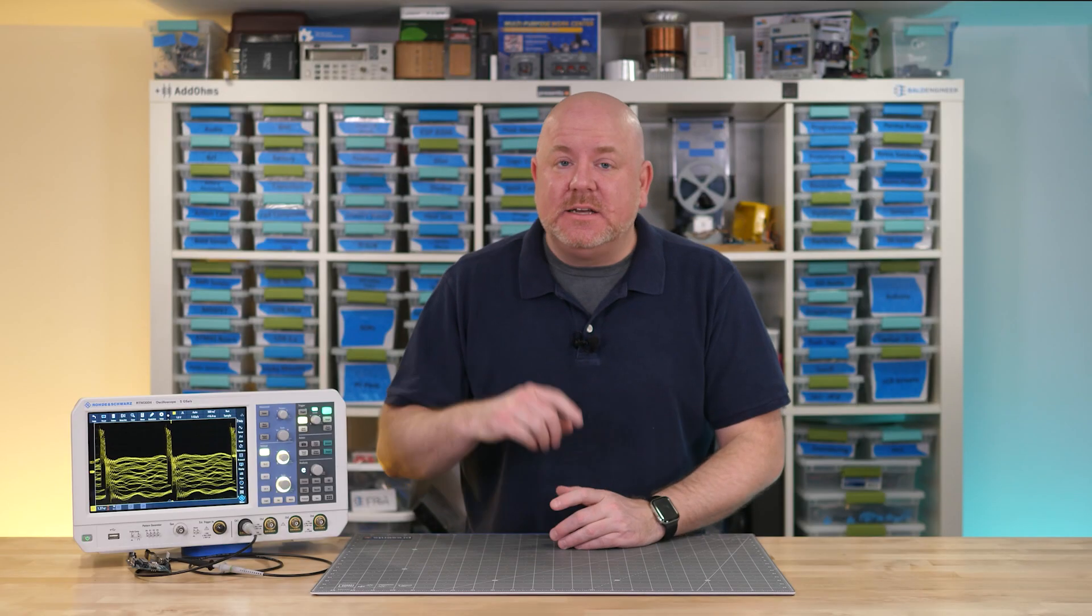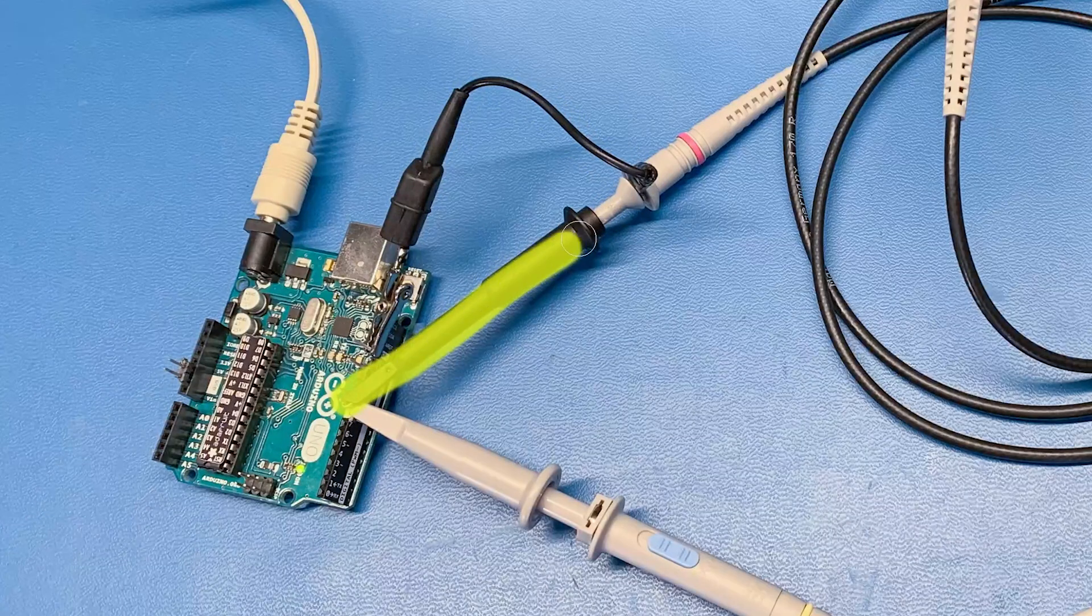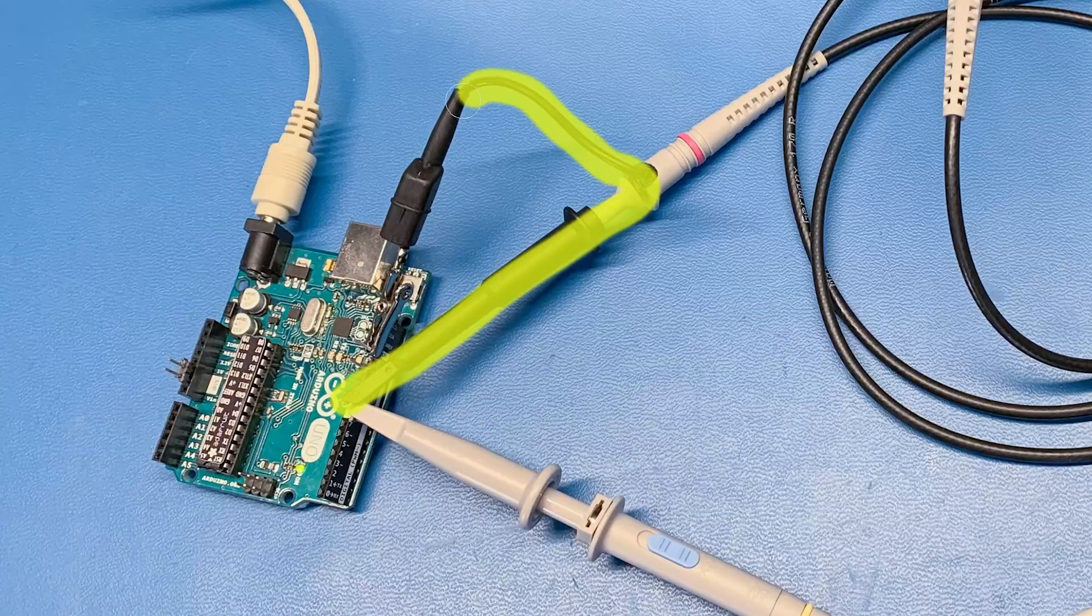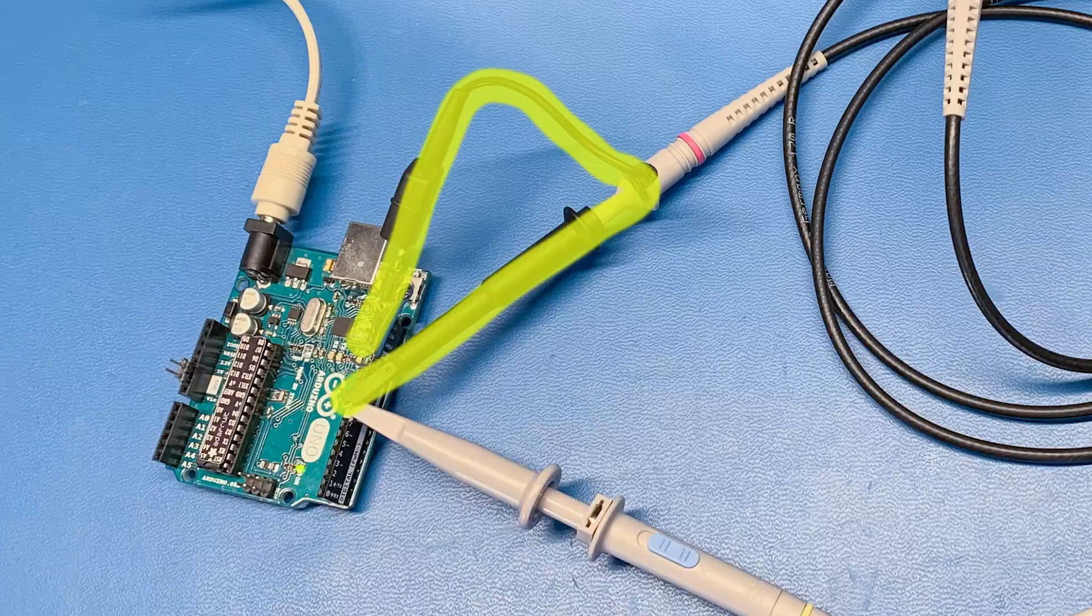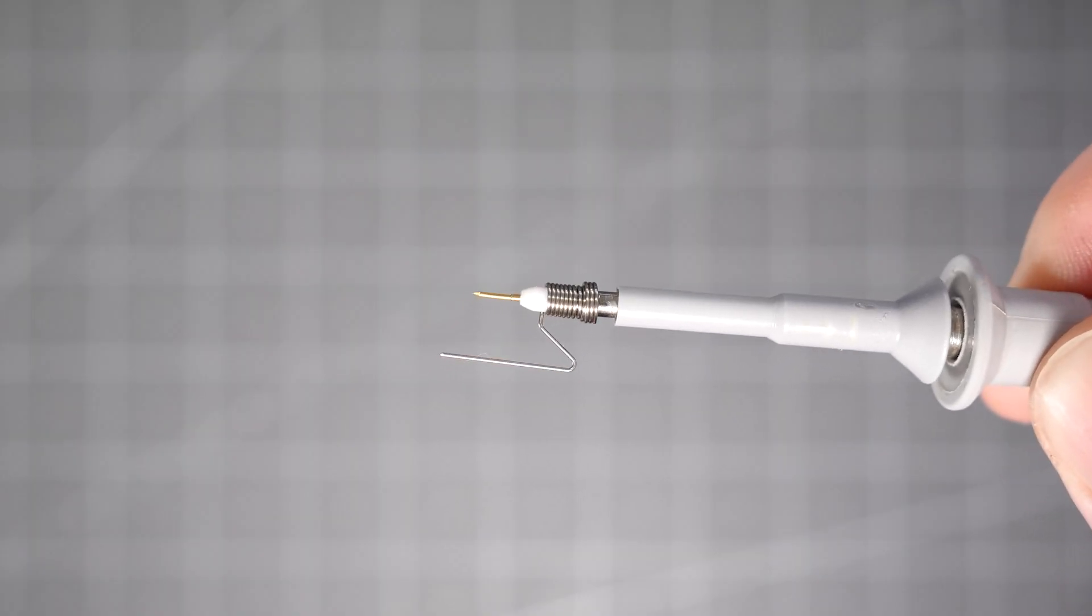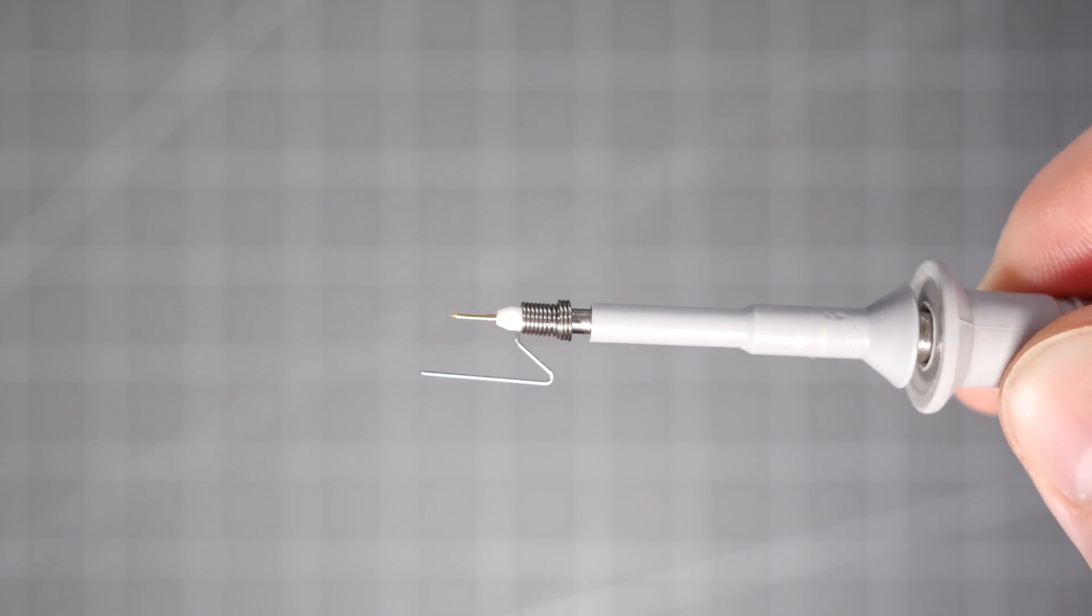And to see why that is let's trace the return path. The loop for probe 1 starts at the tip then it hits the ground wire and goes right back into the DUT's ground. It is a relatively small loop and keep in mind that spring I showed earlier would have been even smaller.